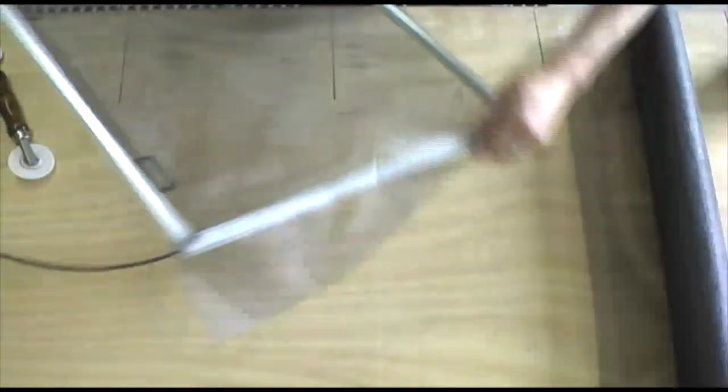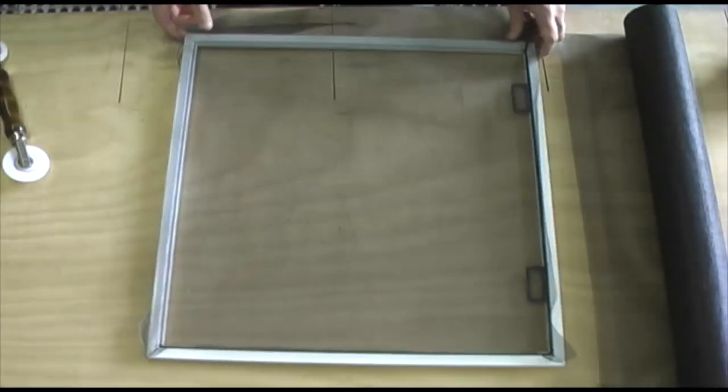After the main roll is trimmed away, you can turn your screen so you are always working on the side closest to you.